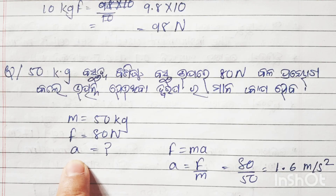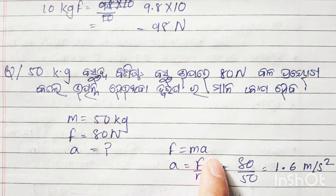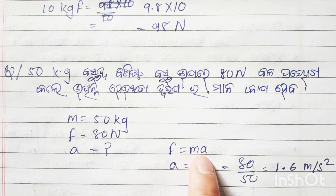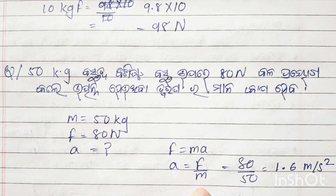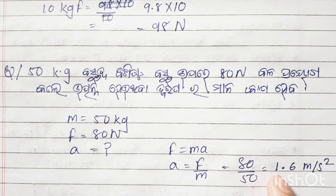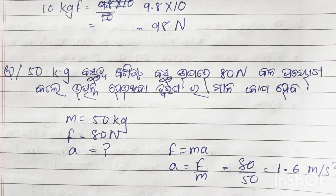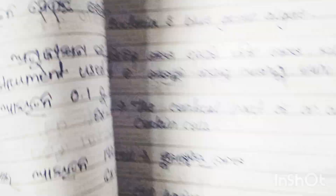Using F equals m into a: acceleration A equals F divided by m, which equals 80 divided by 50, giving 1.6 meters per second squared. I hope we can understand.